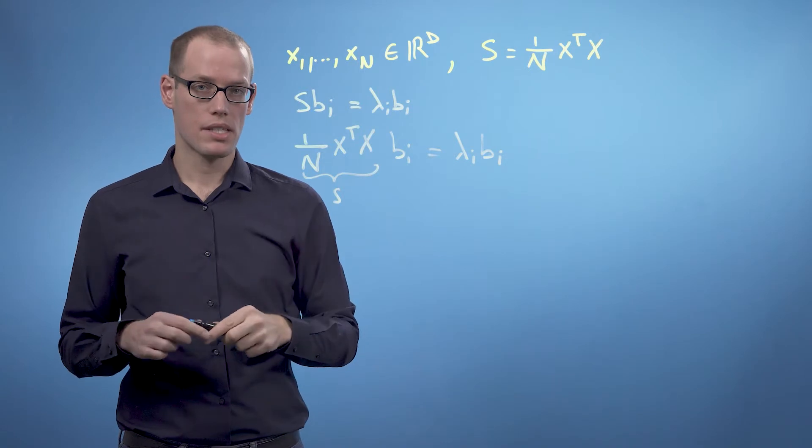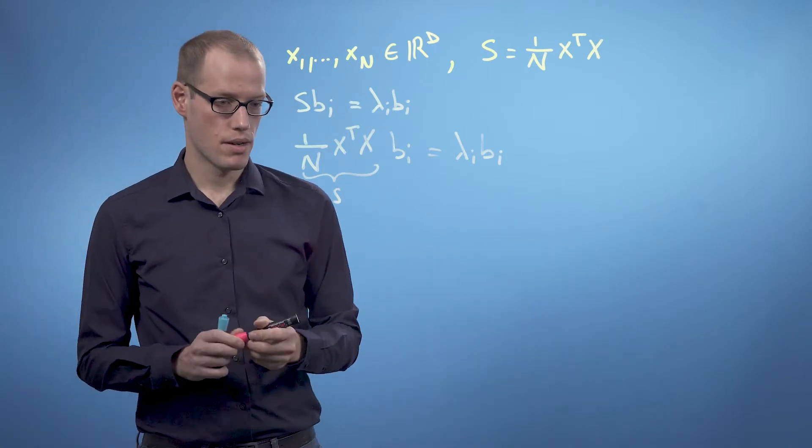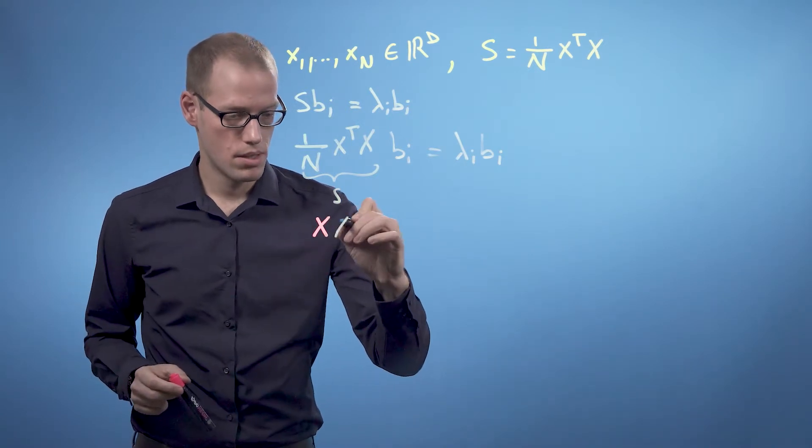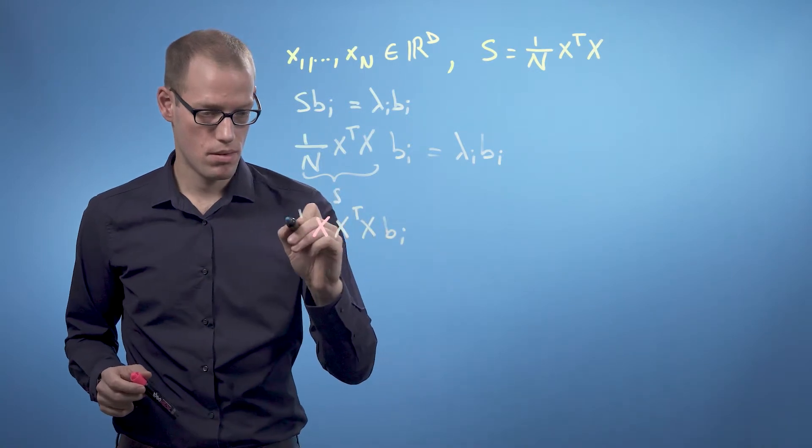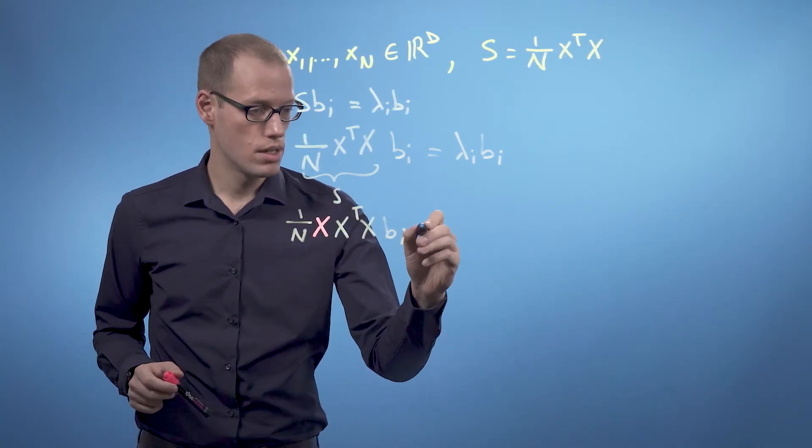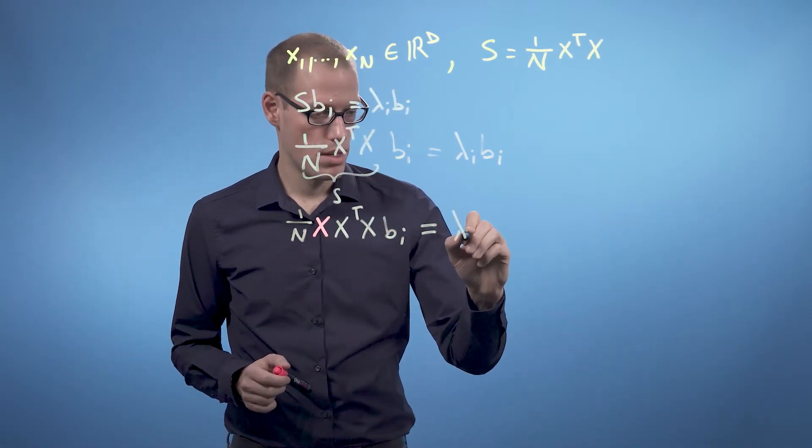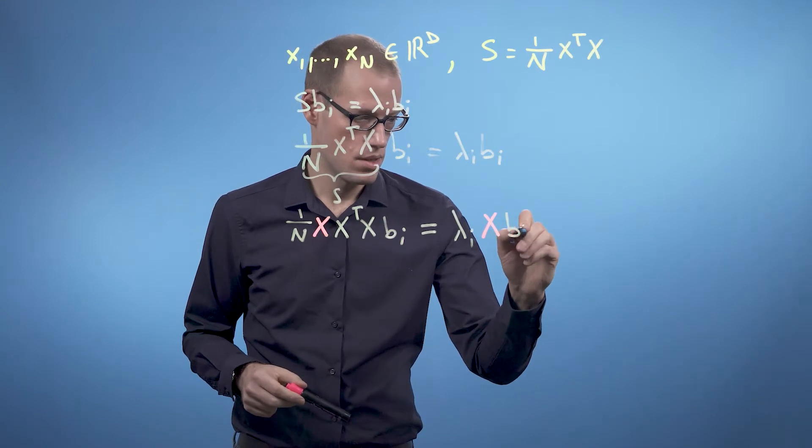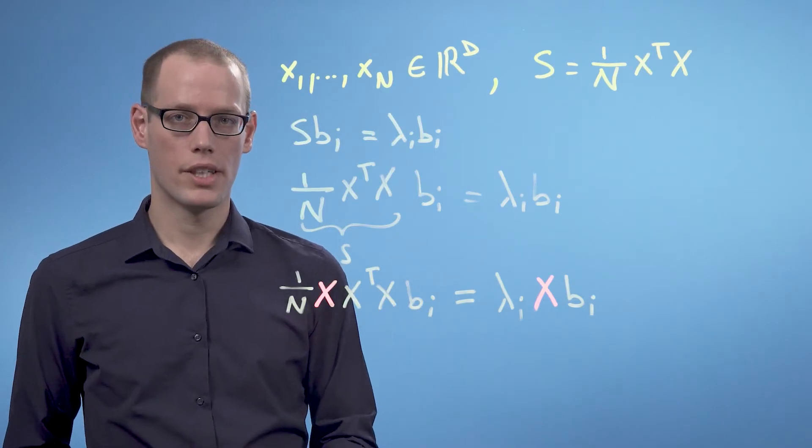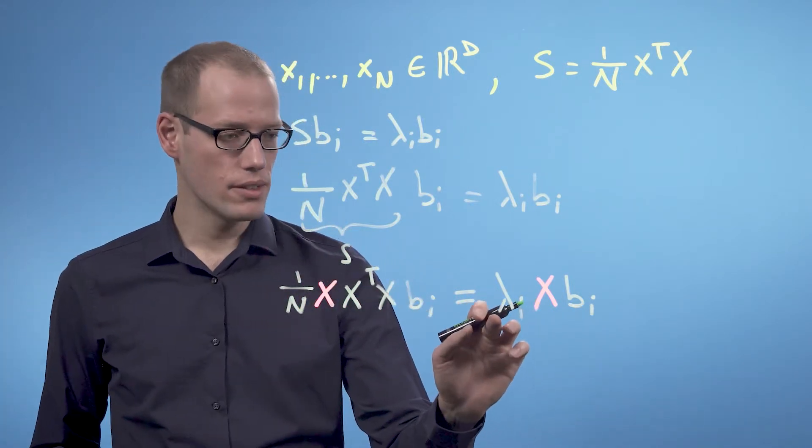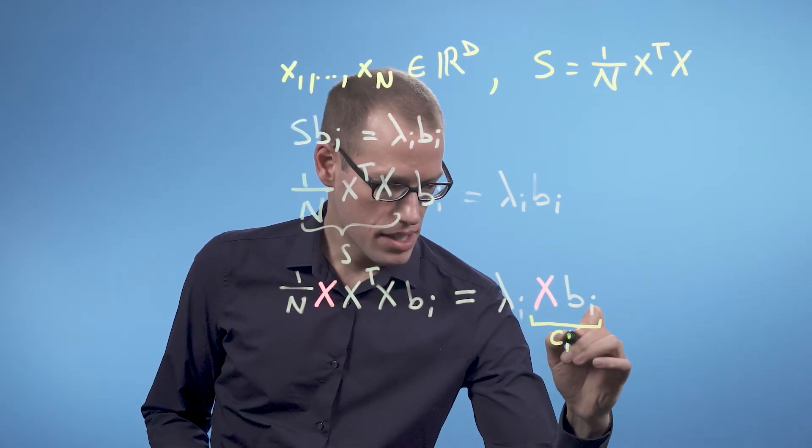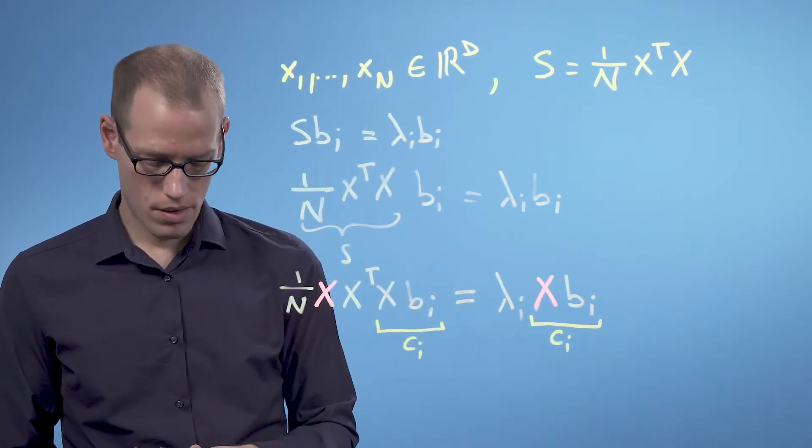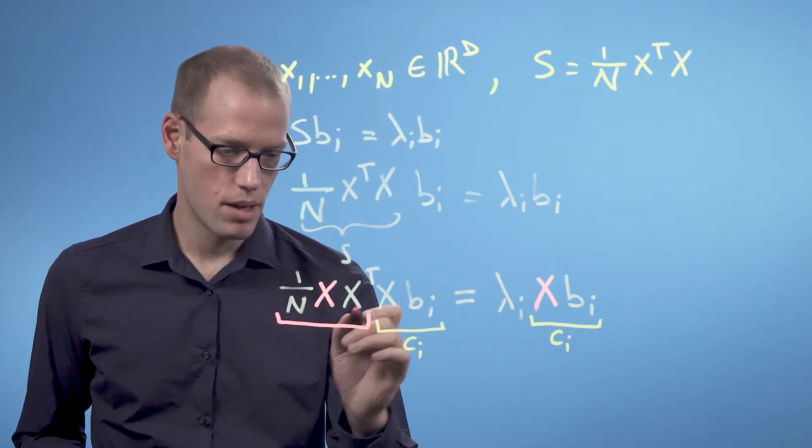And now we multiply X from the left-hand side. So we will get X X^T X b_i times 1/N equals λ_i times X X b_i. And now we have a new eigenvector eigenvalue equation. So λ_i is still an eigenvalue and now we have eigenvectors X b_i, which we call c_i, of the matrix 1/N times X X^T.